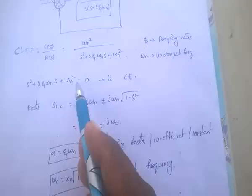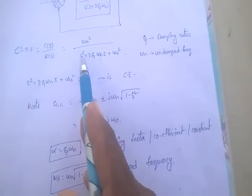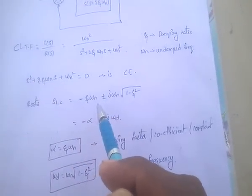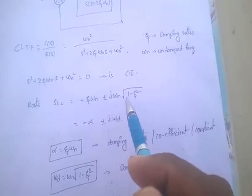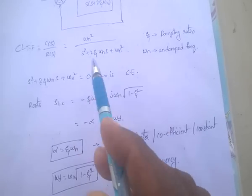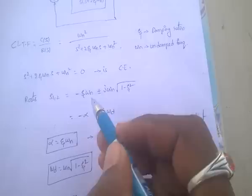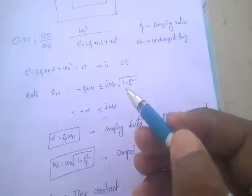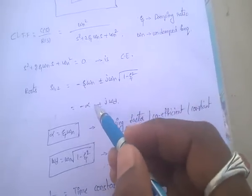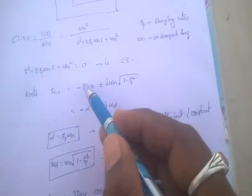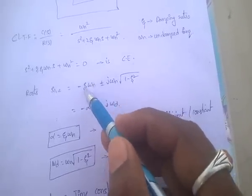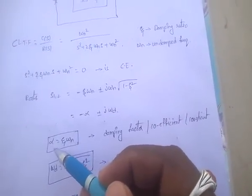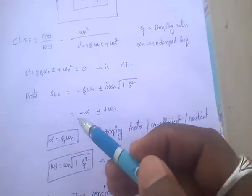Coming to the roots of this characteristic equation — the order is 2, so we have 2 roots. S₁,₂ = −ζωn ± jωn√(1 − ζ²). In simplified form, the roots equal −α ± jωd, where α = ζωn. Alpha is called the damping factor, damping coefficient, or damping constant.